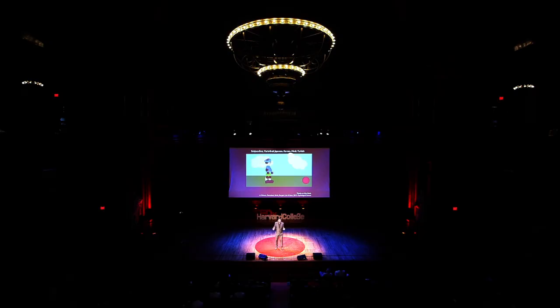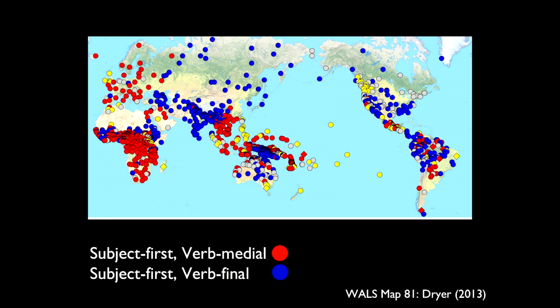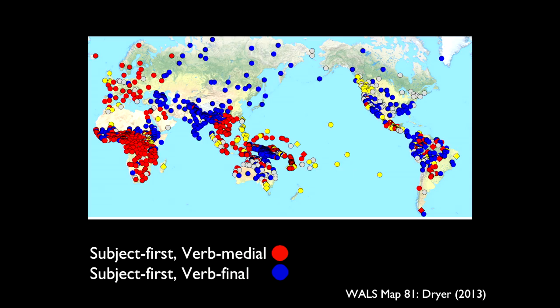If you're a native speaker of Turkish, Persian, or Japanese, you probably thought of it differently: 'boy ball kicks,' not 'boy kicks ball.' These languages are all verb-final — still subject-first, but the verb comes at the end. There are tons of those as well. When you look at where languages are distributed around the world, you notice mostly blue and red dots — languages like English and Chinese (subject-initial, verb-medial), and languages like Japanese (subject-initial, verb-final). That's the dominant number of languages by far.